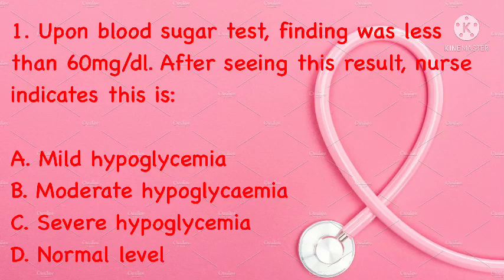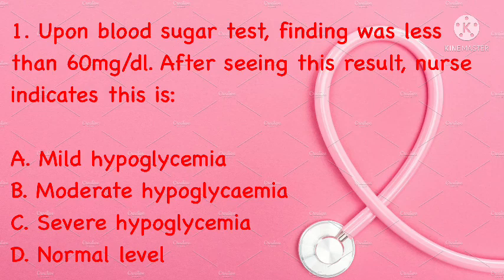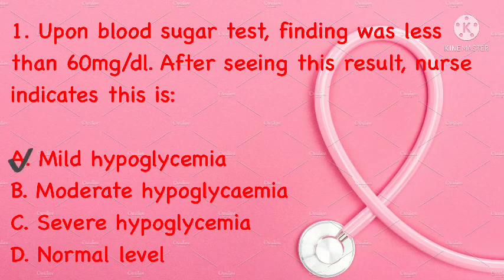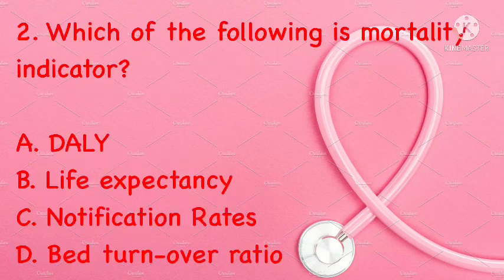Upon blood sugar test, the finding was less than 60 mg/dL. After seeing this result, the nurse indicates this is: mild hypoglycemia, moderate hypoglycemia, severe hypoglycemia, or normal level. Correct answer is A: mild hypoglycemia.